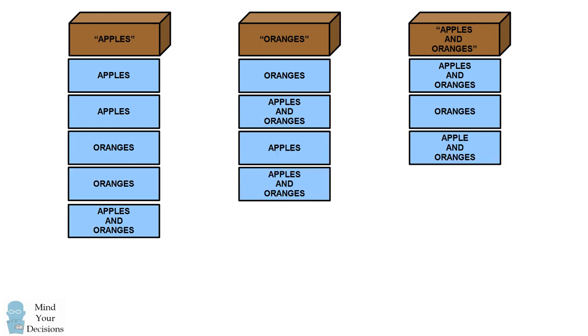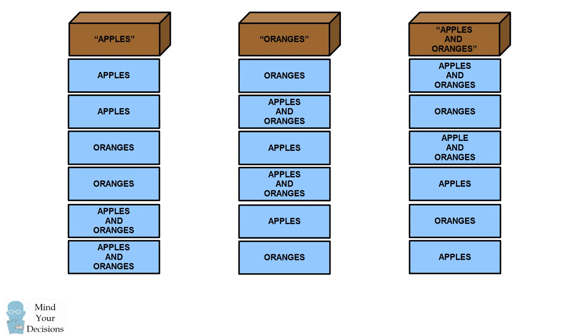So in this manner, we can go through and enumerate all the different ways to label the three boxes. As there are three choices for the first label, two remaining choices for the second box, and only one label remaining for the third box, there are three times two times one, or three factorial, which equals six possible ways to label the boxes. There are six permutations.